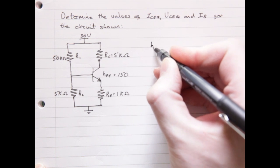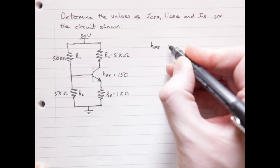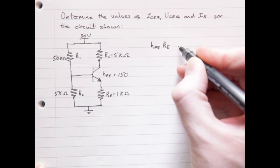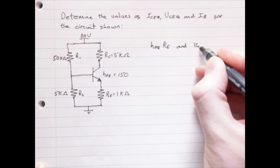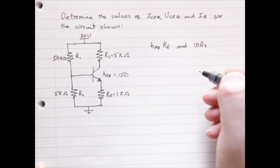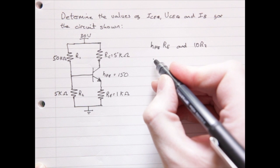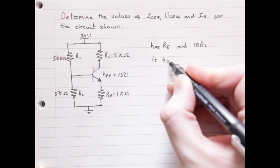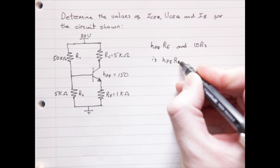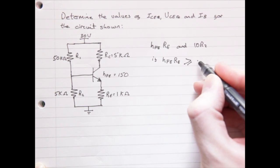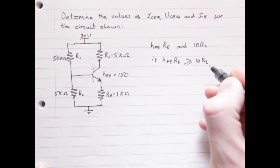The first step we must check is the loading effect of the transistor. We do this by comparing HFE times RE and 10 times R2. Now, if the value HFE times RE is greater than or equal to 10 times R2, which is the case here, we can ignore the loading effect of the transistor and continue as follows.